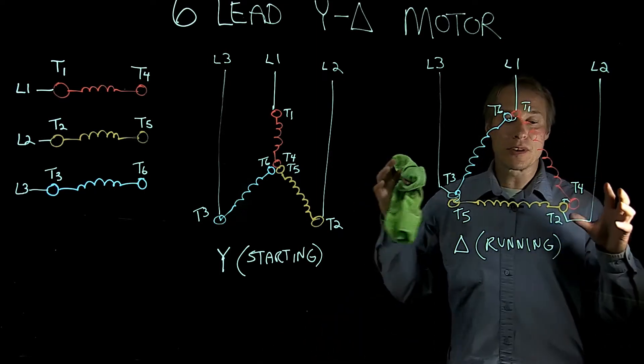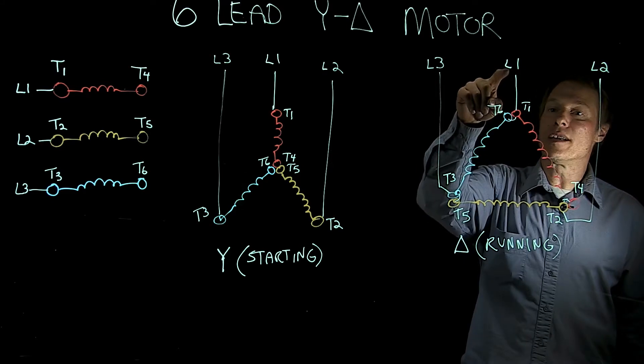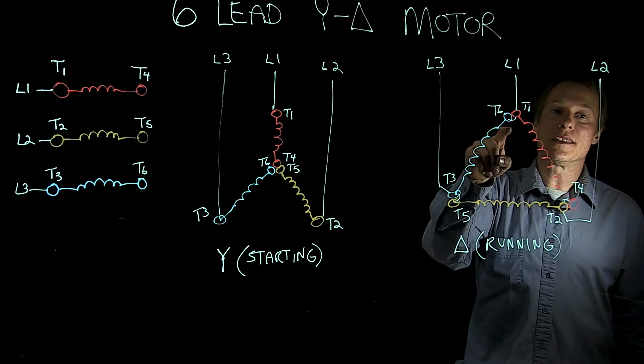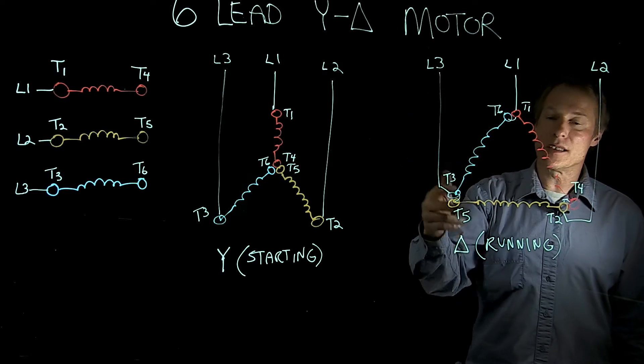So in essence, what happens with the delta formation or connection is L1 really connects to T1 and T6, L2 connects to T2 and T4, and L3 connects to T3 and T5.